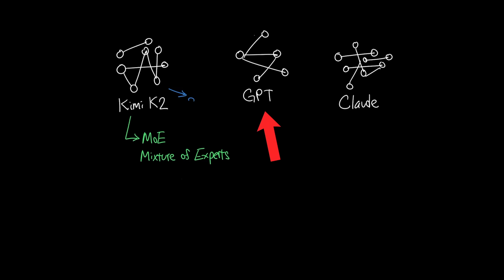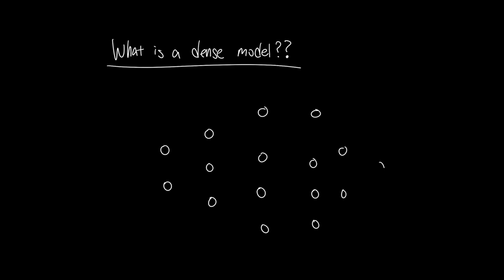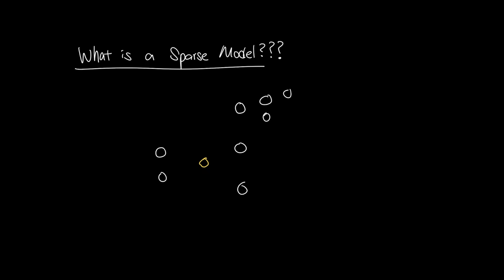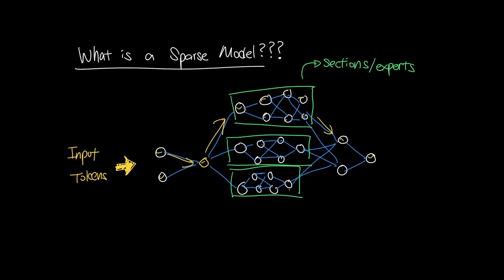The architecture of Kimi K2 is built around what's called MOE or mixture of experts. Most commercial models like GPT and Claude are dense models while Kimi K2 is a sparse model. A dense model is your typical feedforward neural network that can activate the entire model to process tokens, whereas sparse models activate only a section or few sections of the model to process your tokens.